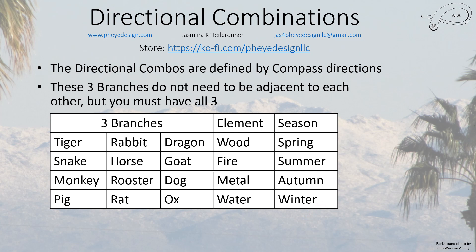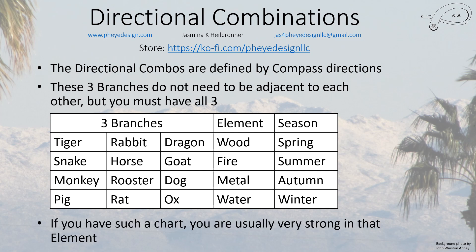So this is how you can either call it seasonal or directional — it's pretty clear. Now if you have such a chart, you are usually already quite strong in that element, because all of these have water in them, these all have metal, these all have fire, and these all have wood. So you usually are going to be already quite strong.